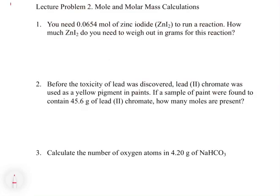In lecture problem 2, we're going to look at some examples of using mole and molar mass calculations. In the first part of the problem, it says you need 0.0654 moles of zinc iodide to run a reaction, and asks how much zinc iodide do you need to weigh out in grams. So let's identify our start and end points: it gives us a number of moles, and asks us to get a number of grams — going from 0.0654 moles of zinc iodide to how many grams of zinc iodide we need.